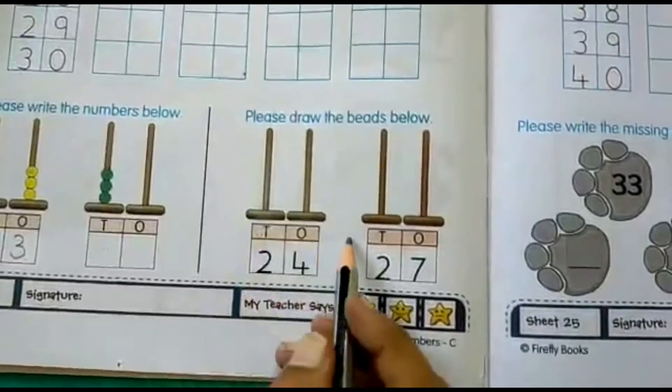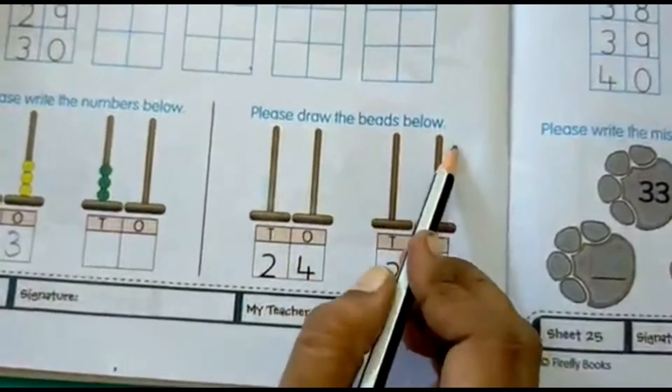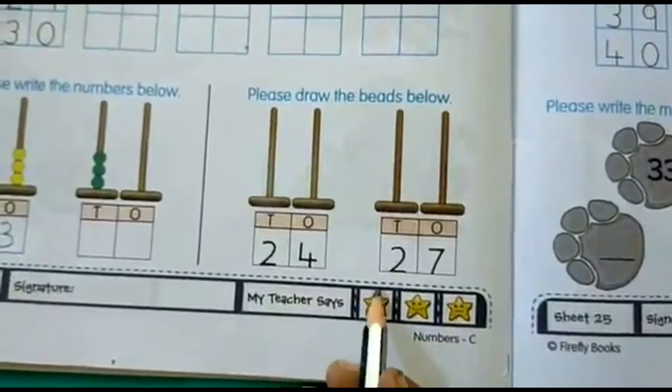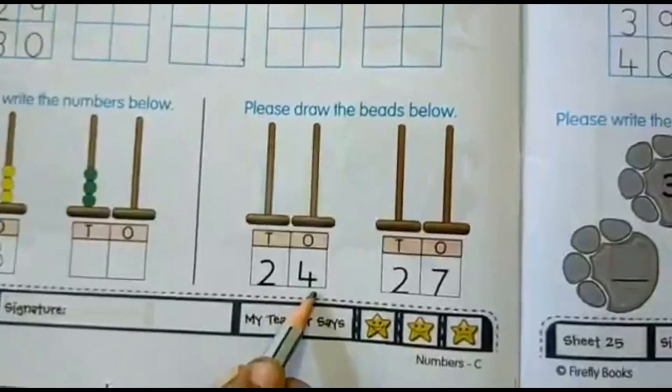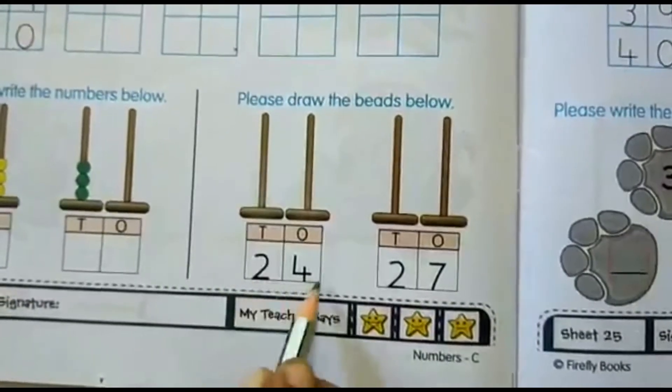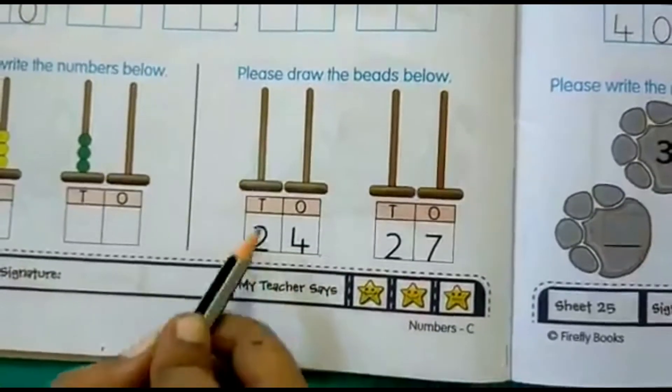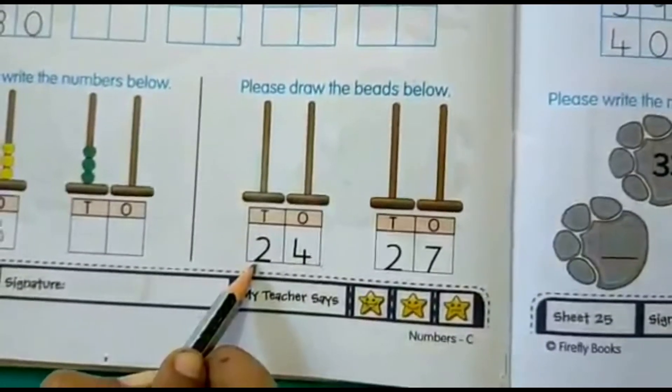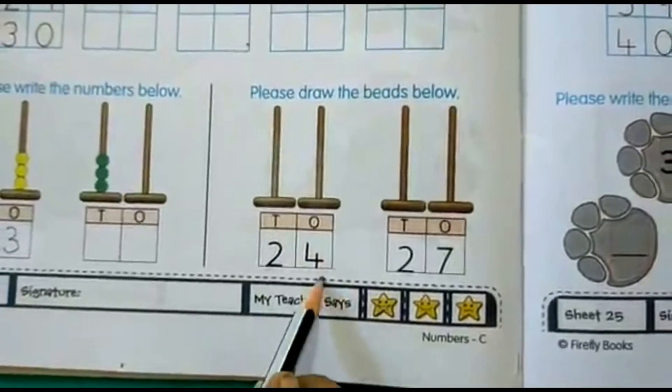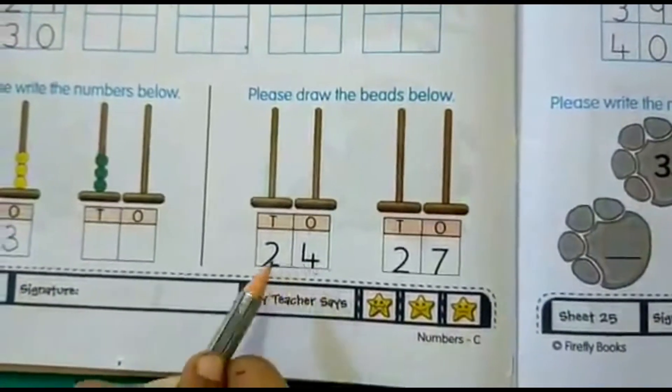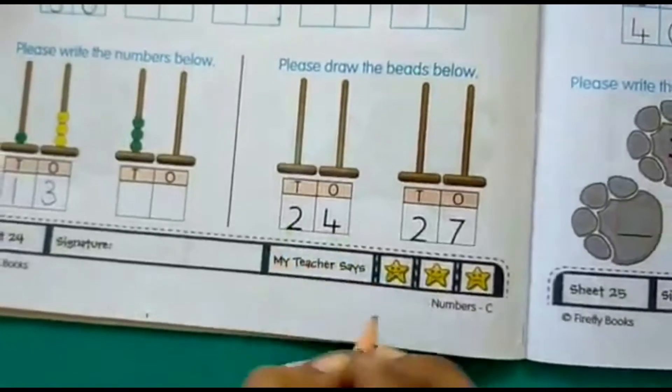So in the next activity, we have to draw the beads below. So there are some numbers given here. In the first box, the number given is 24. 2, 4, 24. So in the tens place, how many beads we have to draw? 2 beads. And in the ones place, 4 beads. That will make it 24. So let's draw it.